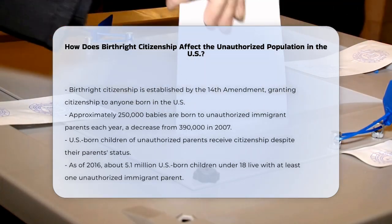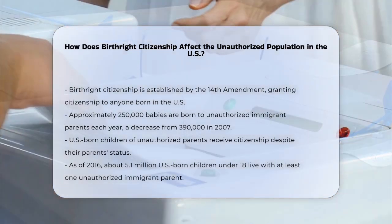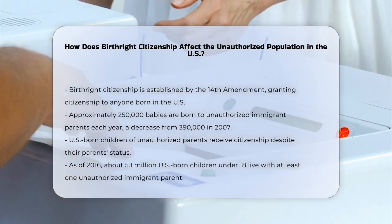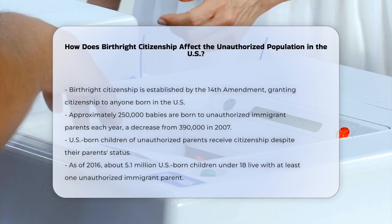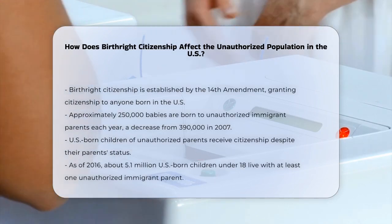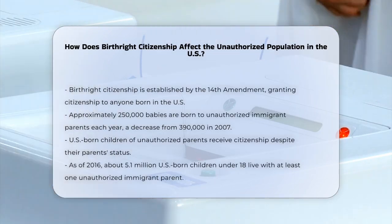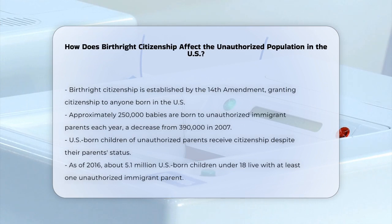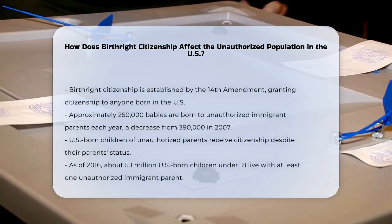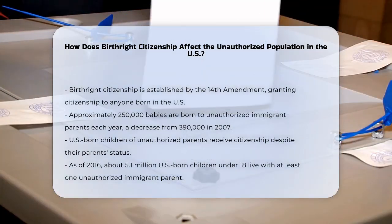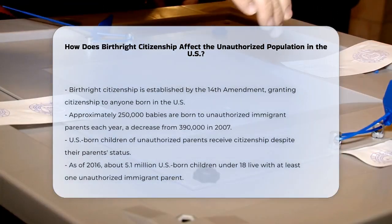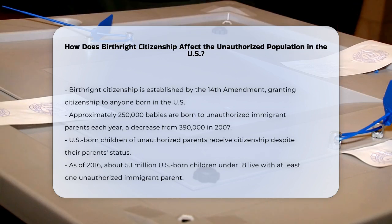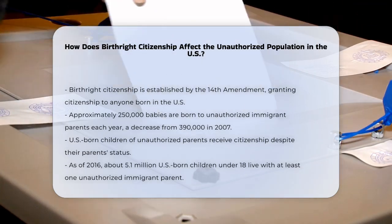Currently, about 250,000 babies are born to unauthorized immigrant parents each year, down from a peak of 390,000 in 2007. These children, despite their parents' unauthorized status, are granted U.S. citizenship at birth.